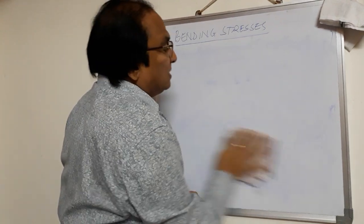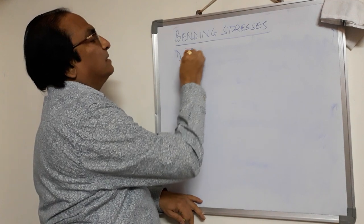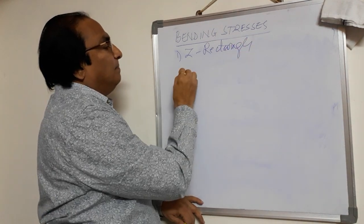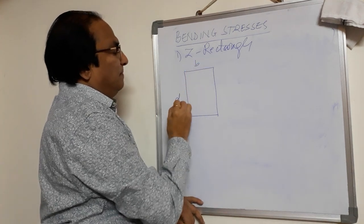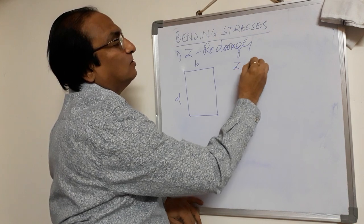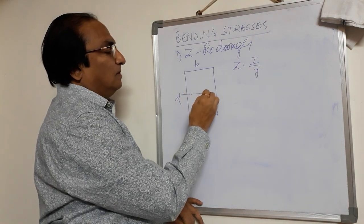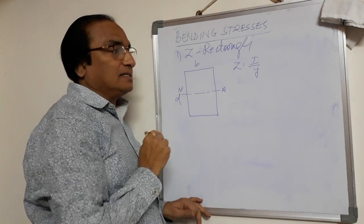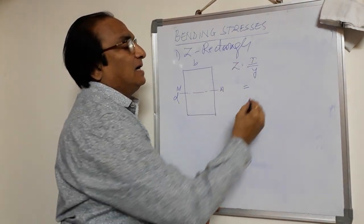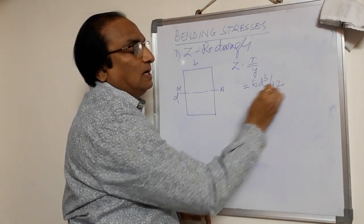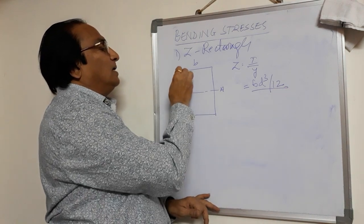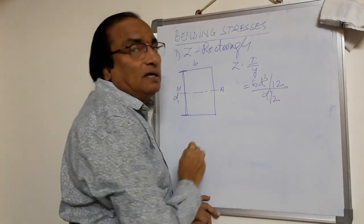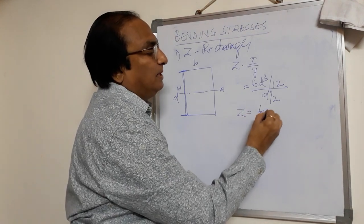Here we will try to find out the section modulus of some regular figures. The very common figure used in beams is a rectangle. Section modulus for a rectangle: if the cross section of the beam is B by D, the neutral axis is at the centre. Moment of inertia for a rectangle is BD³/12. The distance of the extreme fibre from the neutral axis is D/2. So Z = BD²/6.